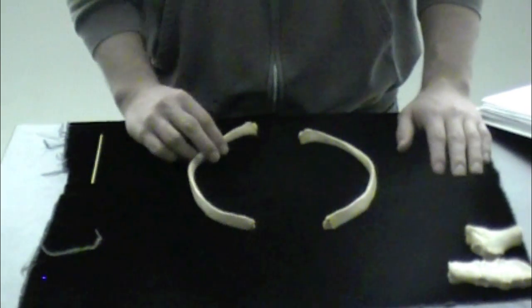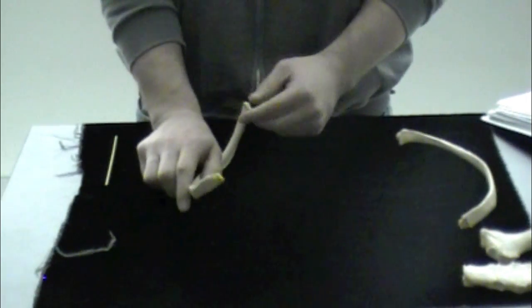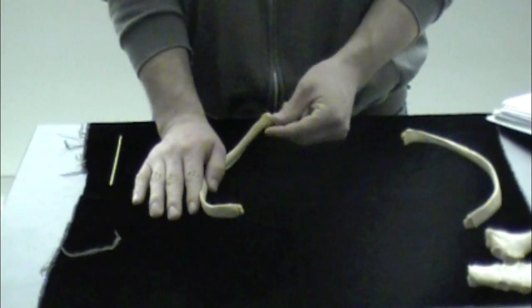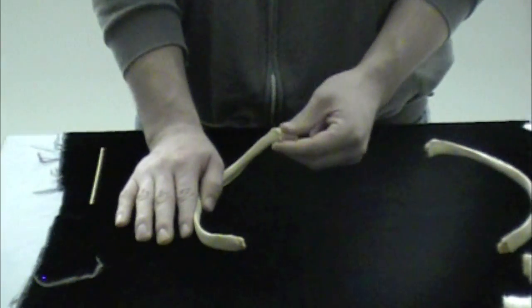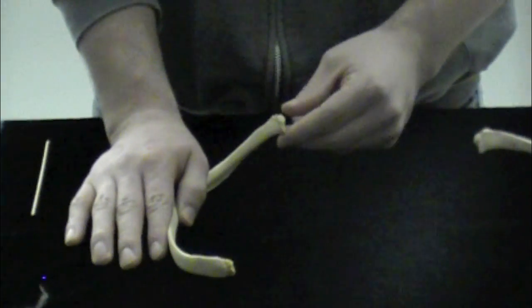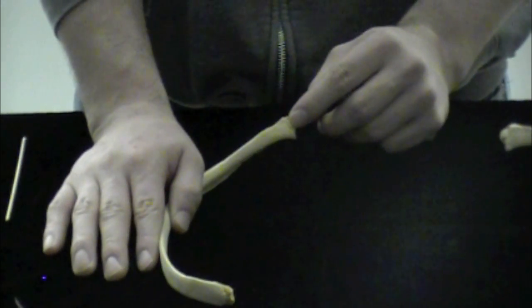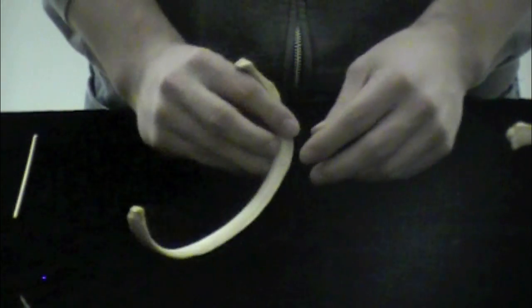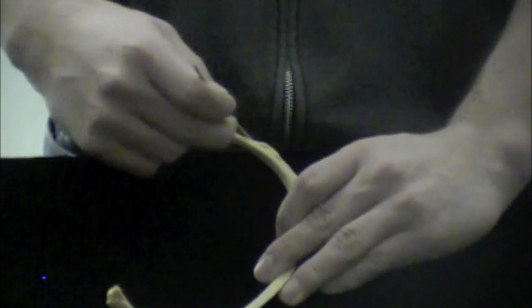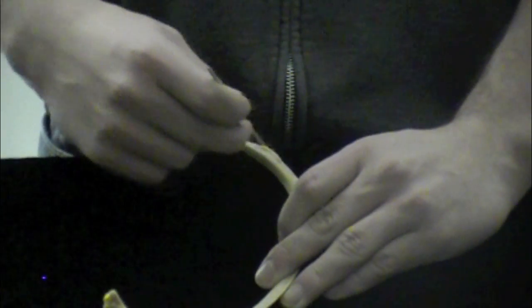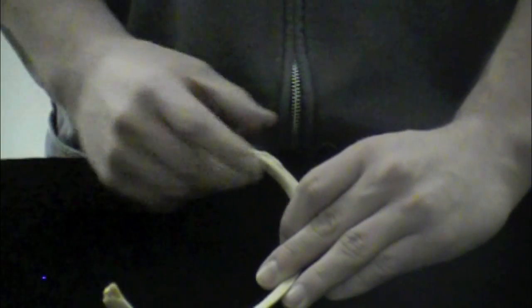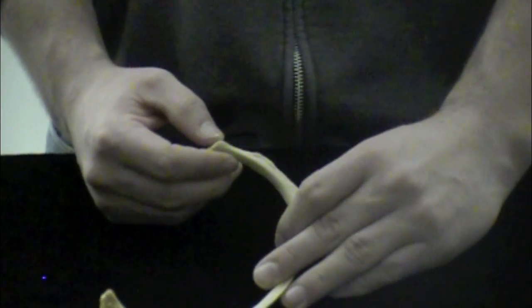We'll look at this rib here. This structure that's going to be articulating with the vertebrae is going to be called the head. That's going to be that structure right there. And then if I flip this over, you can see a bump on the backside here. That's going to be called the tubercle. The tubercle is going to articulate with the transverse process of the vertebrae.